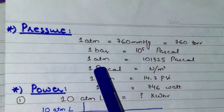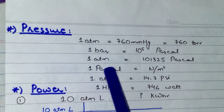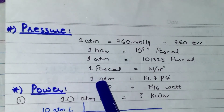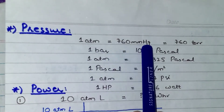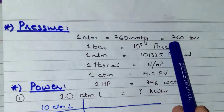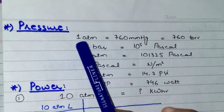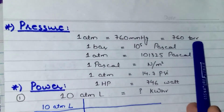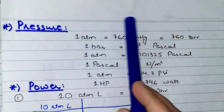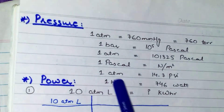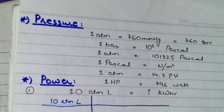I have written all the most importantly used units of pressure here. You can see that 1 atm equals to 760 mmHg equals to 760 Torr. It's our first relationship and it is the mostly used relationship of pressure. So it's better that you remember all these pressure units by heart.